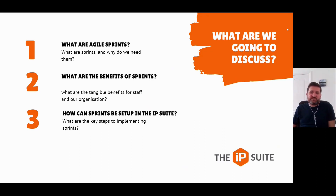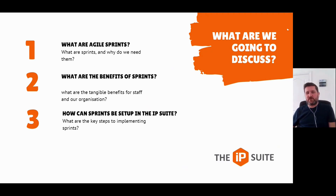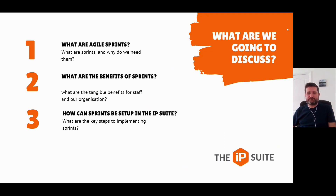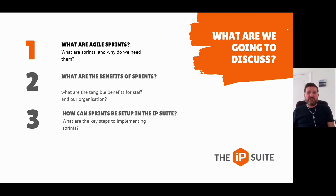What are we going to discuss today? The presentation is split into three parts and doesn't just include slides, but an interactive look at our agile performance management tool, School IP or College IP. Firstly, we'll discuss what agile sprints are and why we need them. Secondly, we'll introduce some of the benefits of implementing sprints for both staff and the school or college. And finally, we'll show you how you can implement these sprints into your professional development reviews.